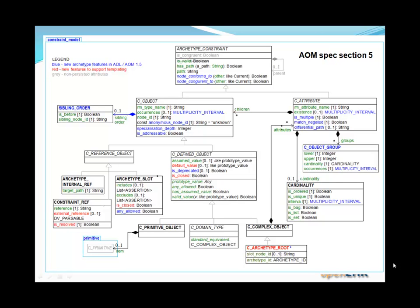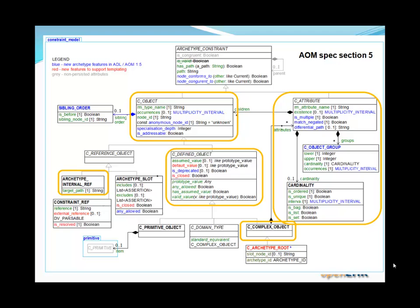Just to remind those among you who are technical — this is the Archetype Object Model. Section 5 includes this part of the model. This part deals with the main definition part of an archetype, that is, the technical constraint part. In this part of the course, we'll look at the highlighted classes: C_Object, C_Attribute, and C_Complex_Object at the bottom — the main types to enable you to build constraints of any size of hierarchy. The class C_Defined_Object contains a number of attributes enabling specific types of constraining, default values, and assumed values. On the left is Archetype_Internal_Ref, a type for expressing an internal reference within an archetype.